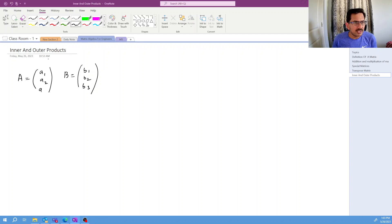So today we'll talk about inner and outer products of the vector. Let's consider we have two vectors A and B, both are column vectors, and in this case A is three by one and B is also three by one.